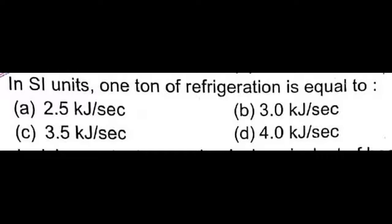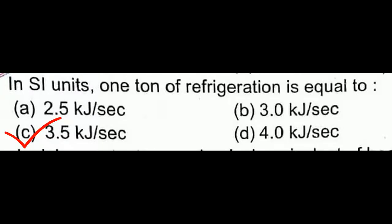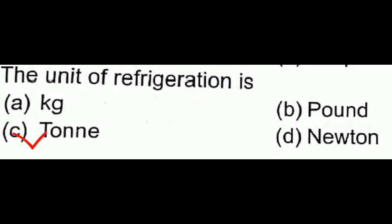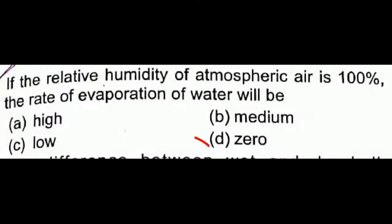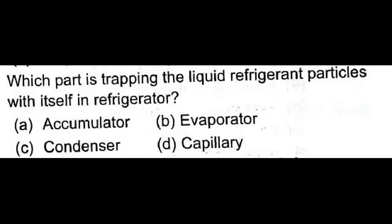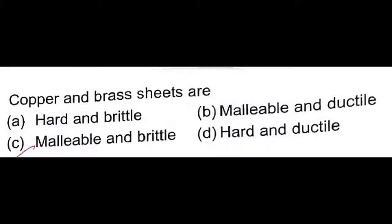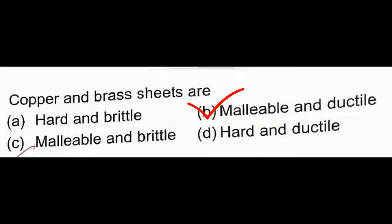In SI units, one ton of refrigeration is equal to 3.5 kilojoules per second — that is the correct answer. The unit of refrigeration is the ton — option C is correct. If the relative humidity of atmospheric air is 100%, the rate of evaporation of water will be zero; at 100% relative humidity there is condensation, not evaporation. The accumulator traps liquid refrigerant particles — option A is correct.